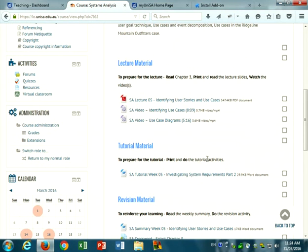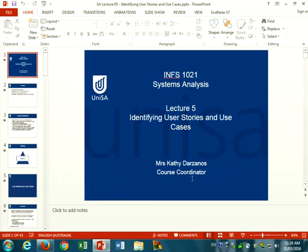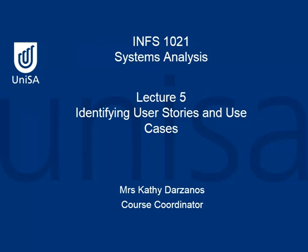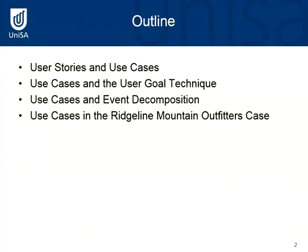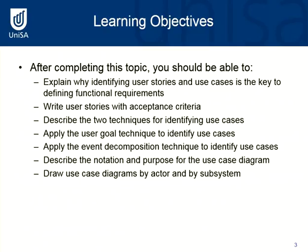I'm presenting on the assumption that you've all had a look through the slides or read the associated chapter on identifying user stories and use cases. It's important to realise that we're now starting to think about gathering information and gathering requirements from users in relation to a particular system that needs to be developed. We need to start thinking about how we gather requirements and what we do when we gather them.